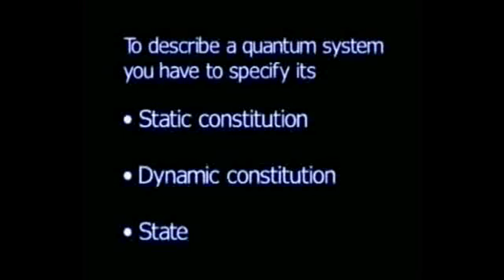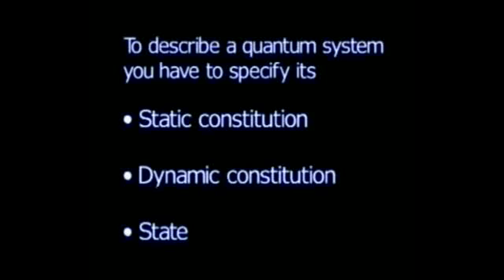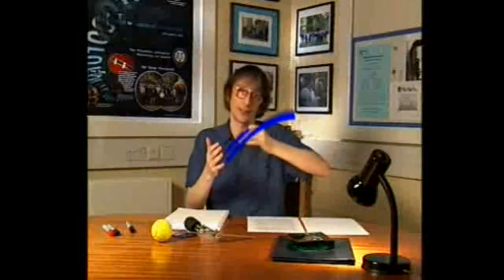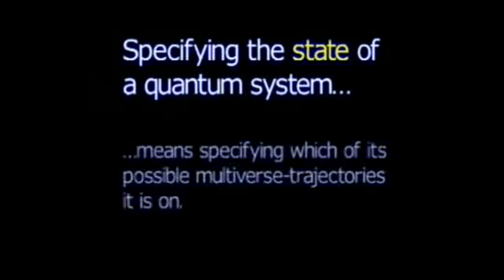To complete the description of a quantum physical system, we need to specify a third thing, namely its state, what it's actually doing during a particular experiment in all the universes in which it exists. In classical physics, the analog of specifying the state would be specifying which trajectory the system is on. So, in the quantum case, the state specifies which of its trajectories in the multiverse the whole multiversal object is on.